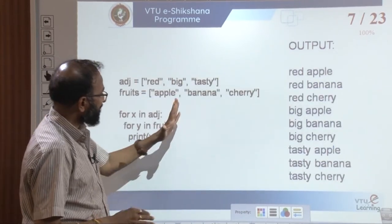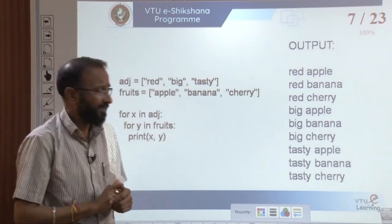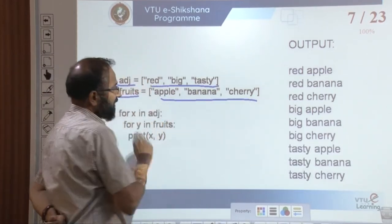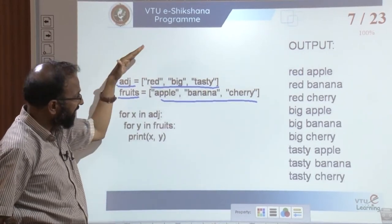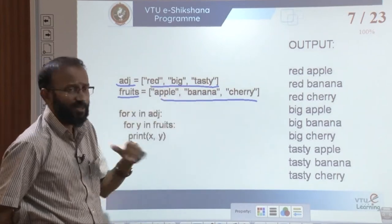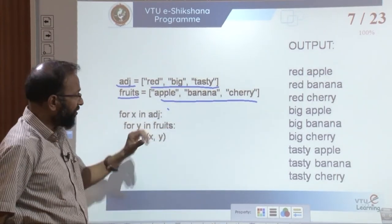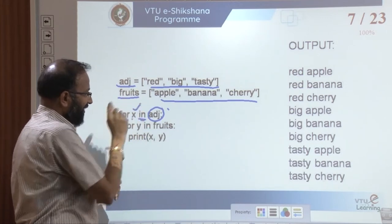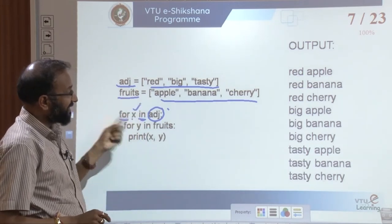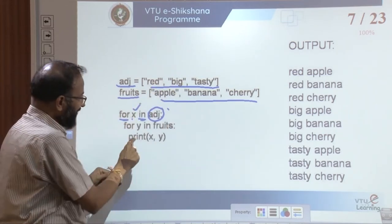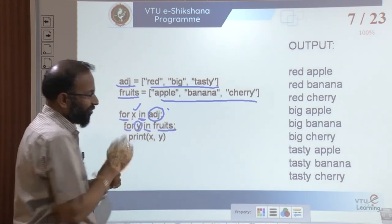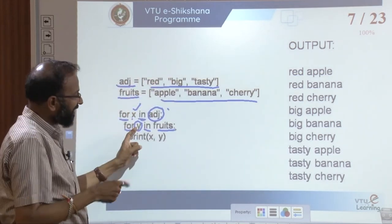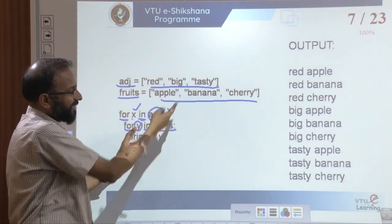Another code example shows how to use a for loop. We have two lists: one with values ['red', 'big', 'tasty'] and another with ['apple', 'banana', 'cherry']. We can run an iteration accessing red, big, tasty on one side and apple, banana, cherry on the other. In the outer for loop, the variable x iterates over the first list. First time x is 'red', second time 'big', third time 'tasty'. Similarly, y iterates over the fruits list.